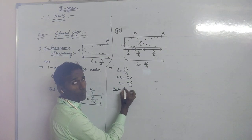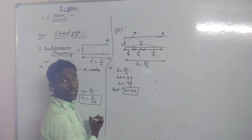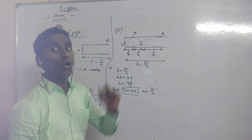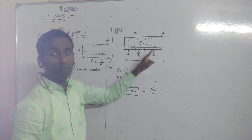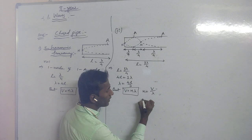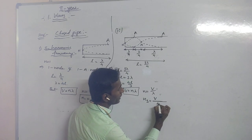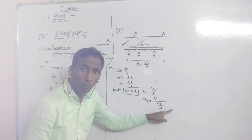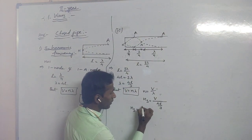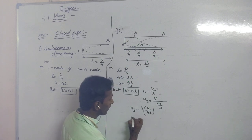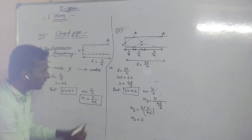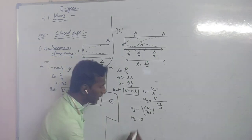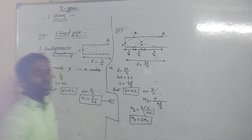Using the wave speed formula V equals n·lambda, frequency N equals V by lambda. Since this is the third harmonic, N3 equals V divided by (4L/3), which equals 3V by 4L. From equation 1, N3 equals 3·N1. This is the third harmonic frequency formula.